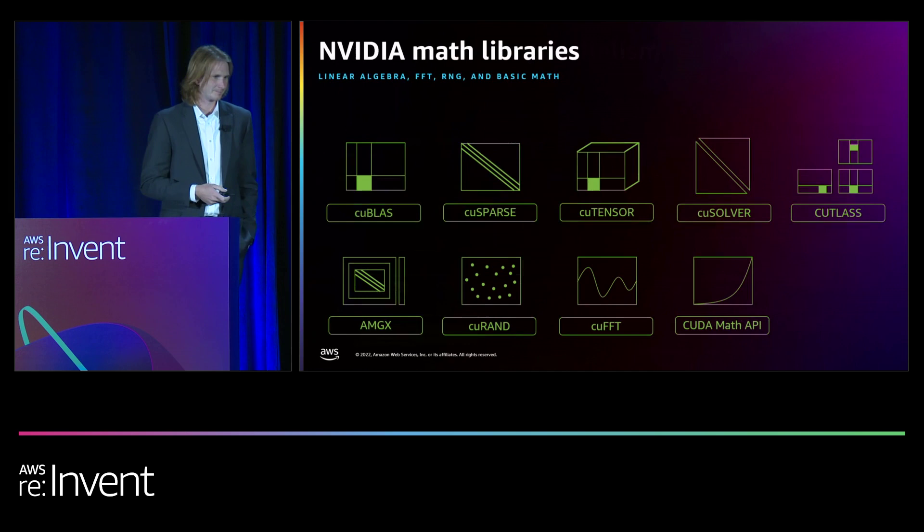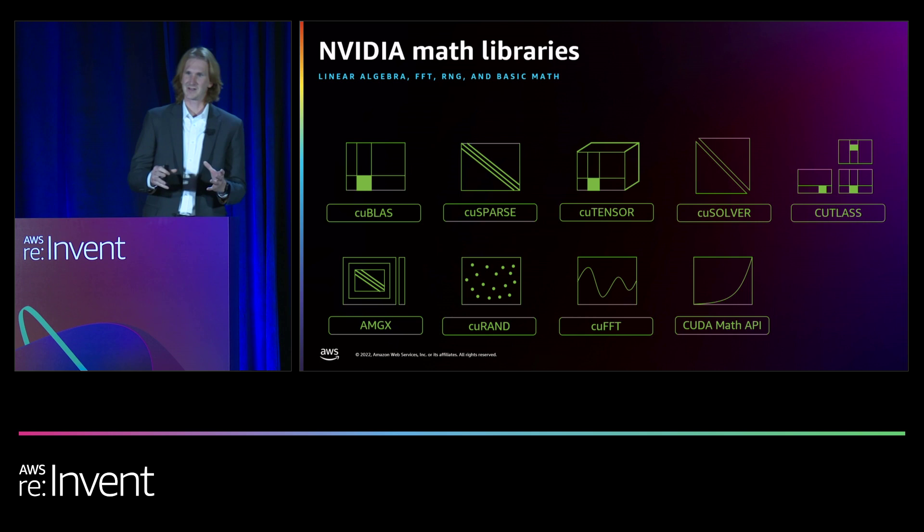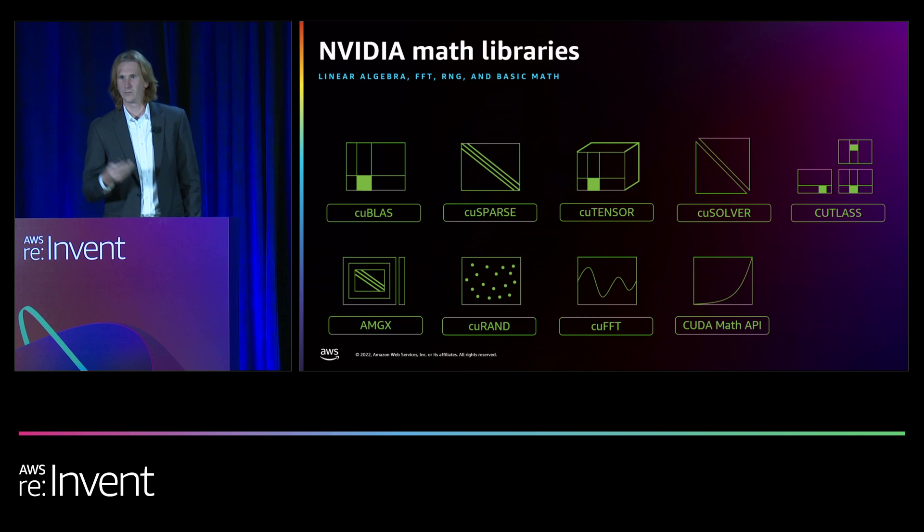That's compilers. The HPC SDK also includes math libraries — not just bundled but tightly integrated. We support math libraries for linear algebra, fast Fourier transform, random number generators, basic math functions, and tensor math. Tensor math is kind of a big deal.